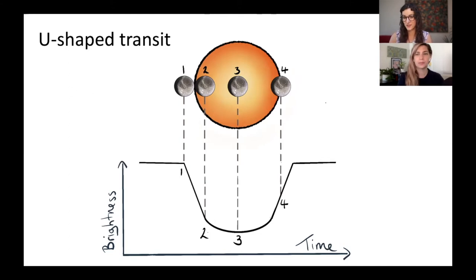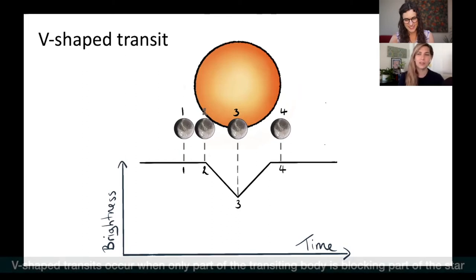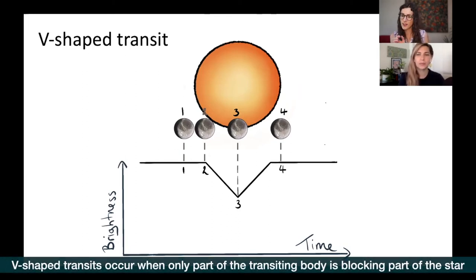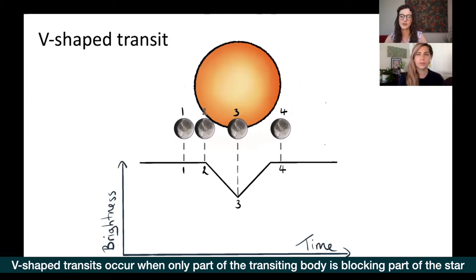We also get V-shaped transits. These happen when only part of the planet is blocking part of the star's disk. In this case, the amount of light being blocked is always either increasing or decreasing, never reaching a flat or curved bottom — which is why we get that V shape.